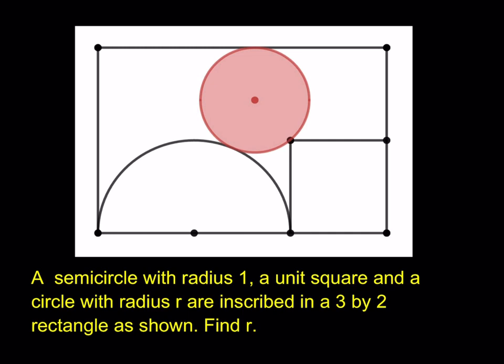Pretty much with all the puzzles that we have on this channel, we start by making some connections. So let me go ahead and connect these two centers right here, which is going to be a good thing to do. And then what we're going to do is drop a perpendicular that passes through the center of the circle, so that we can use the Pythagorean theorem and get some right triangles.